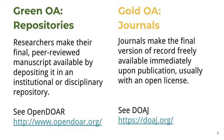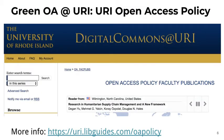Or, authors can publish in Open Access journals that make articles freely available immediately upon publication, usually with an open license — this is known as Gold OA. The DOAJ, or Directory of Open Access Journals, is an online directory that indexes and provides access to quality Open Access peer-reviewed journals. In 2013, the University of Rhode Island faculty passed an Open Access policy, granting the university permission to make their research articles available to the public at no charge through URI's institutional repository, Digital Commons at URI.